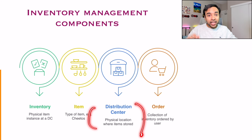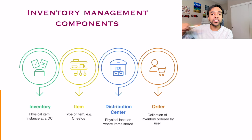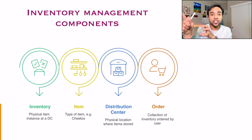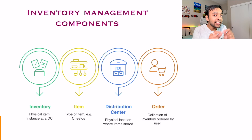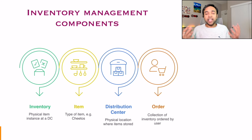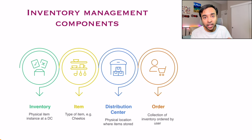The next thing is a distribution center. Distribution centers are different from warehouses because you are not stocking up at a place. A certain distribution center is only responsible for serving the areas within its range. You will not be responsible to ship to every location, and this is very different from an e-commerce application. The last part is an order — an order is nothing but a collection of all of the inventory ordered by the user. You can have five bags of Cheetos, two packs of butter, one gallon of milk — all of these will make up an order.